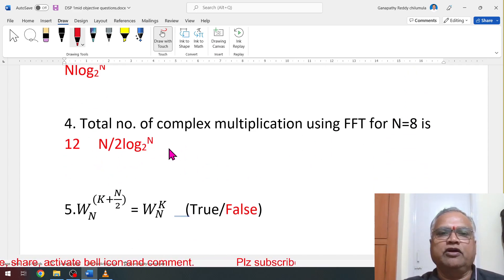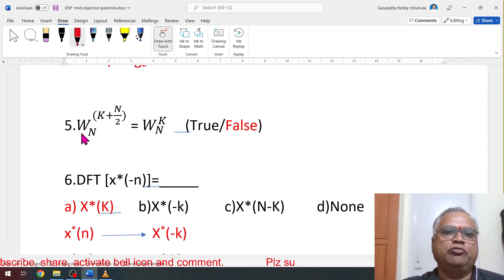Then total number of complex multiplications. And true or false kind of question: W_n^(k+n/2) equal to W_n^k. What is the actual formula? Minus W_n^k. Here minus is not there, therefore it is false. W_n^(k+n) is W_n^k, W_n^(k+n/2) is minus W_n^k. Remember these two properties.